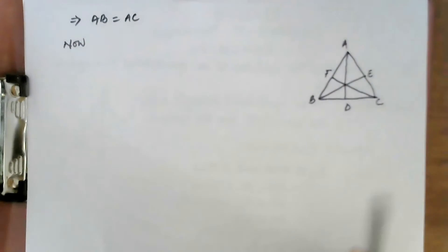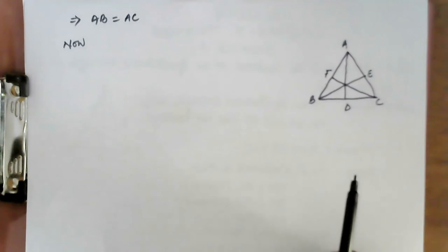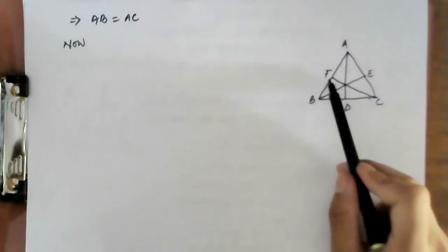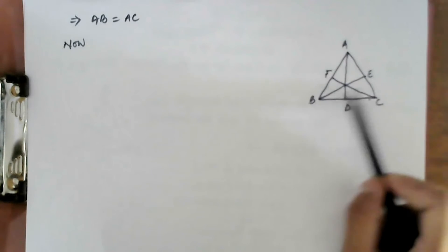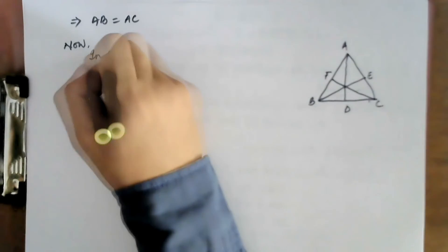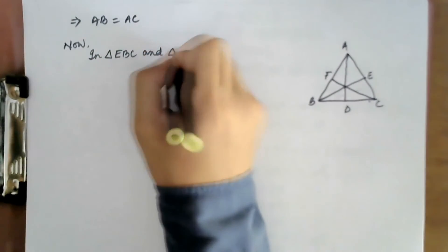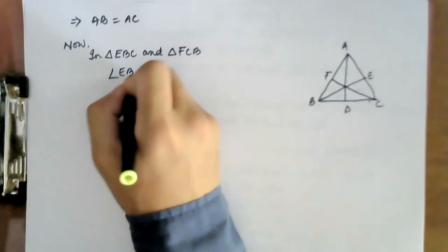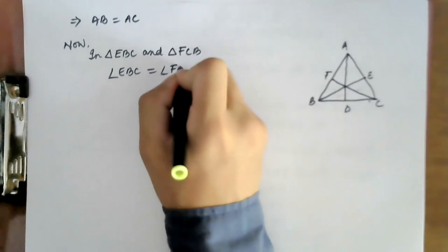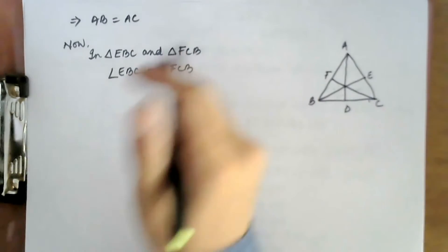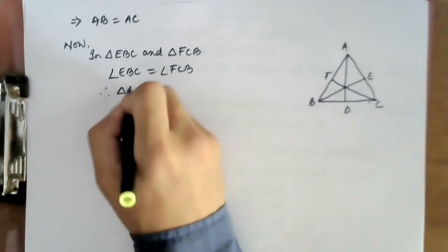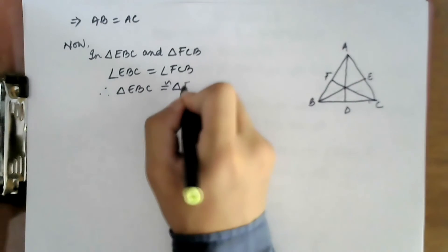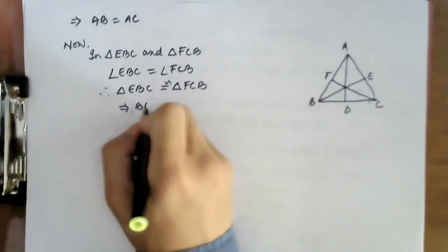Now looking at the triangle again, there are two more triangles to compare: the first is triangle EBC and the second is triangle FCB. In triangle EBC and triangle FCB, angle EBC = angle FCB, using the theorem we proved before.